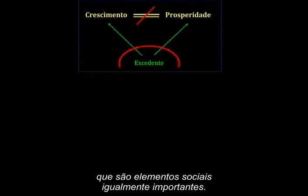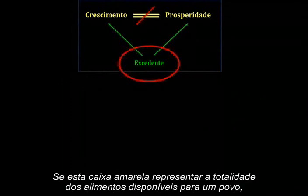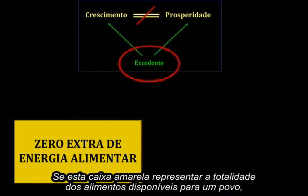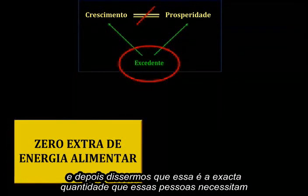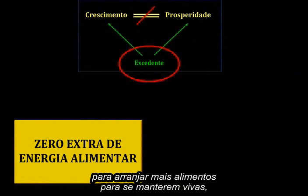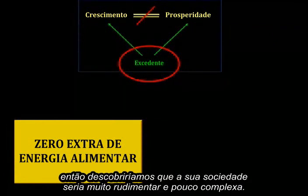They are, and so is one other equally important social element. If we make this yellow box represent the total food energy available to a people, and then set it to exactly equal the amount of food those people need to get more food to stay alive, then we'd find that their society would be very rudimentary and not terribly complex.